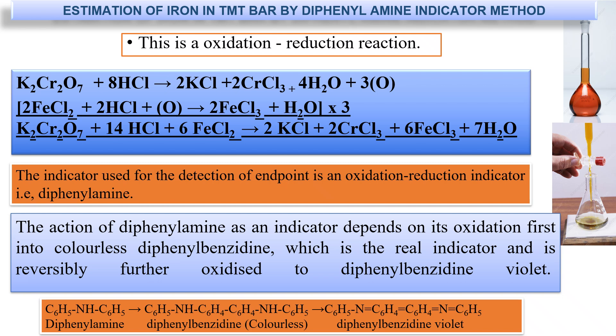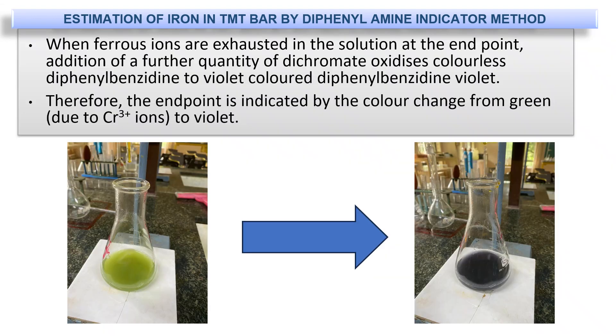This reaction is an oxidation-reduction reaction. The indicator used for the end point is the oxidation-reduction indicator diphenylamine. Diphenylamine is first oxidized to colorless diphenylbenzidine, which is the real indicator, and is reversibly further oxidized to diphenylbenzidine violet. When ferrous ions are exhausted at the end point, addition of further dichromate oxidizes the colorless diphenylbenzidine to violet-colored diphenylbenzidine violet. Therefore, the end point is indicated by a color change from green to violet.